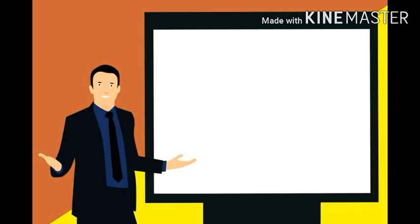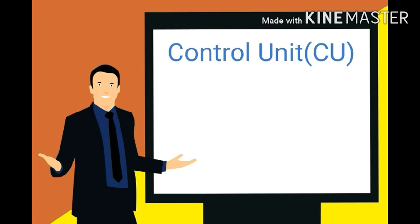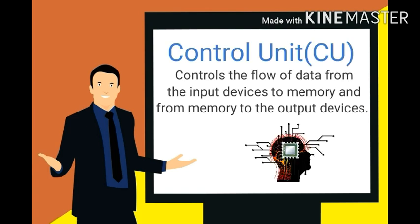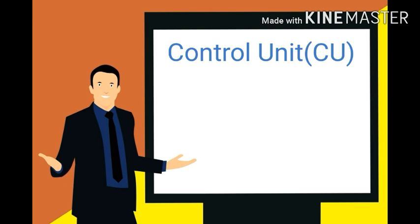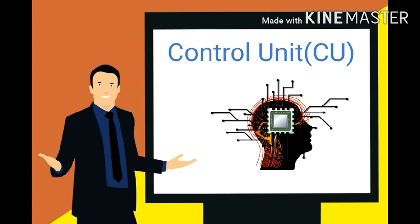Now, the next one is Control Unit. Control unit controls the flow of data from the input devices to memory, and from memory to the output devices. यहाँ पर control unit का काम है कि जो भी data flow होता है — input device से memory में, या memory से output device में — उसको control करने का काम control unit करता है। And it also instructs the Arithmetic and Logic Unit (ALU) to perform a specific operation.